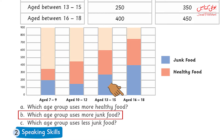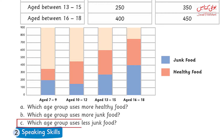Interestingly, the 16 to 18 age group is highest in both junk food and healthy food. The last question is: which age group uses less junk food? The answer is 7 to 9. This is probably because 7 to 9 year old students are very young kids and their parents supervise them and tell them not to eat junk food. So that is the reason the 7 to 9 age group eats less junk food.